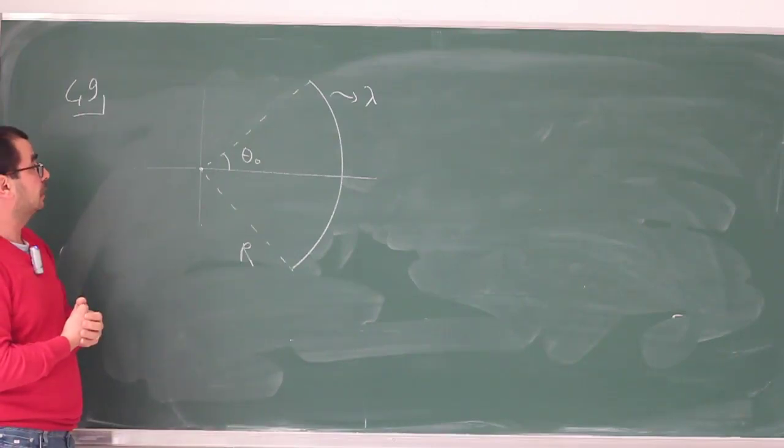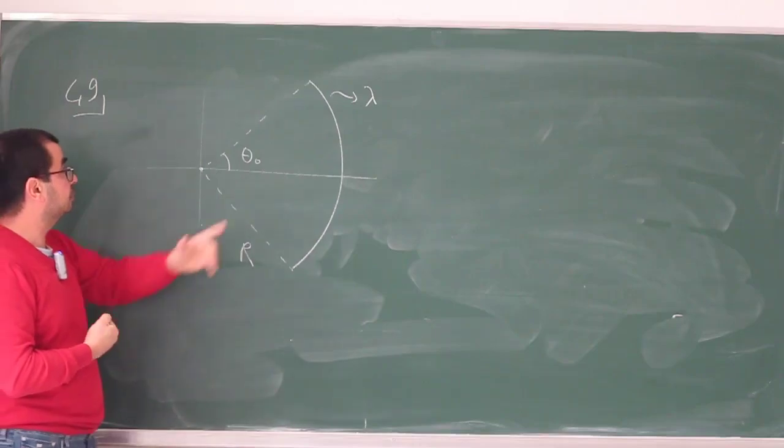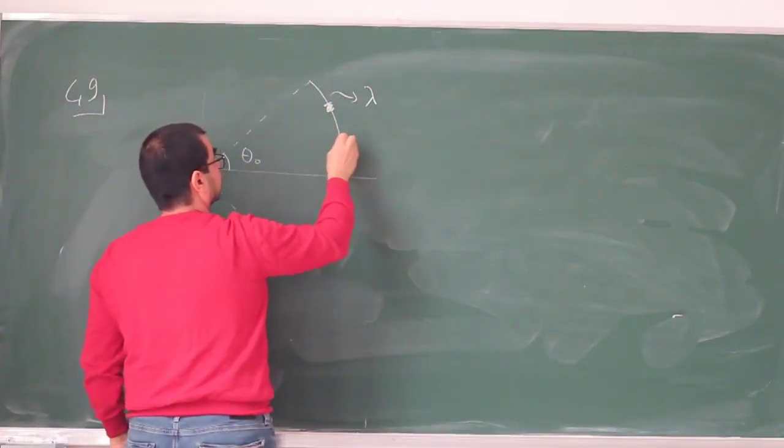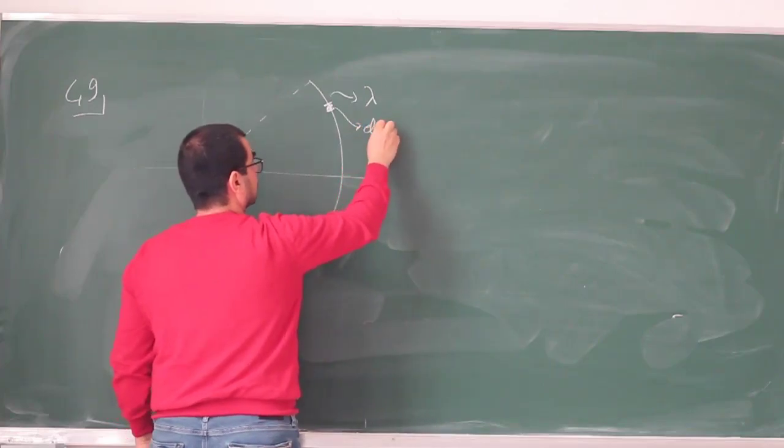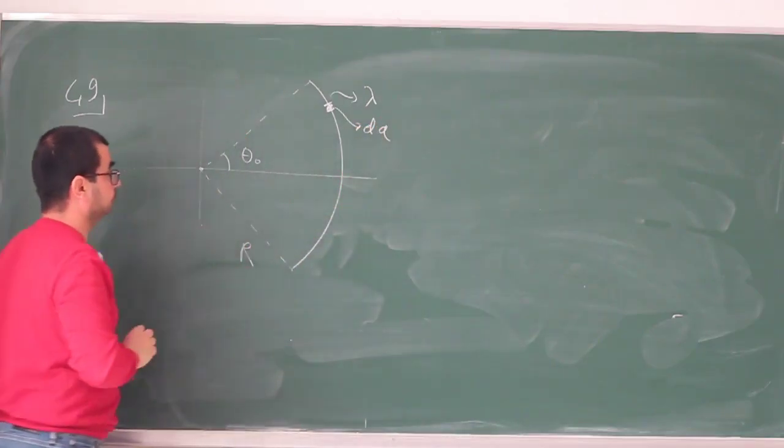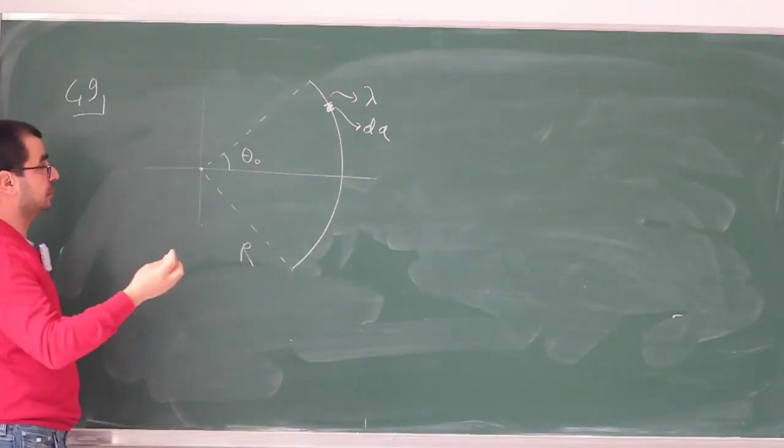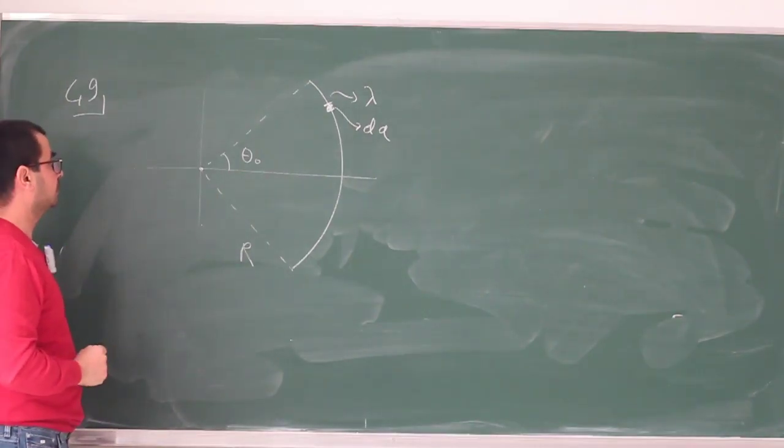So what we need to do is calculate this electric field due to little parts. Let's take one little part on the curve here and calculate only the horizontal component of that electric field and add those up. In this case, we are going to take an integral.